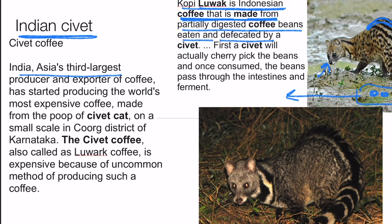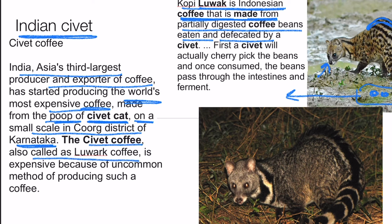India, which is the third largest producer and exporter of coffee, has also started producing the most expensive coffee in the world — made from civet poop. Small-scale production has started in Kurg district in Karnataka. This civet coffee, also called Luwak Coffee, is expensive because of the uncommon method of producing such coffee.